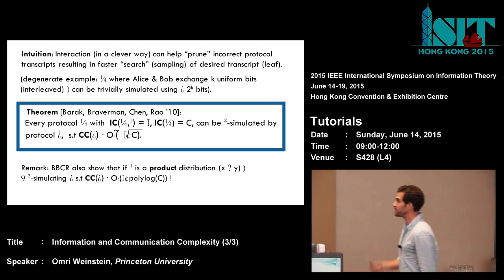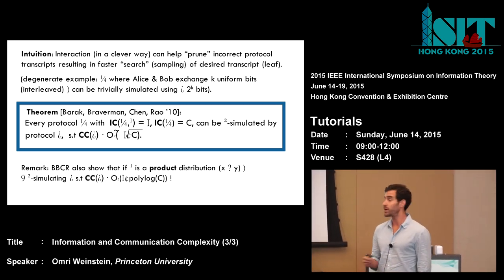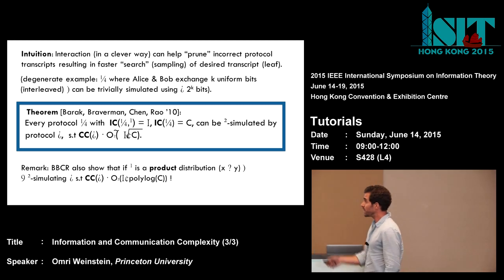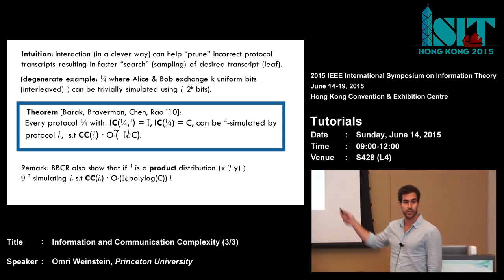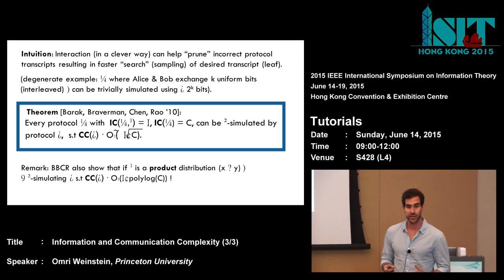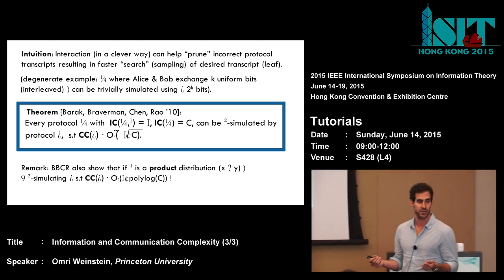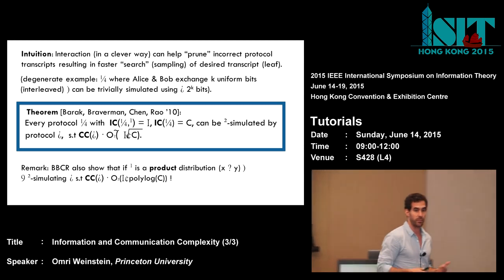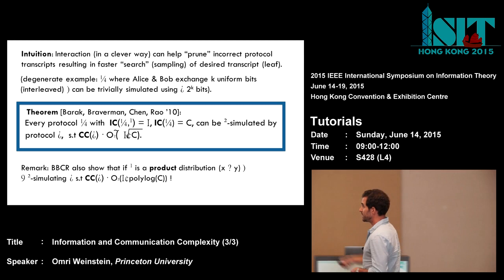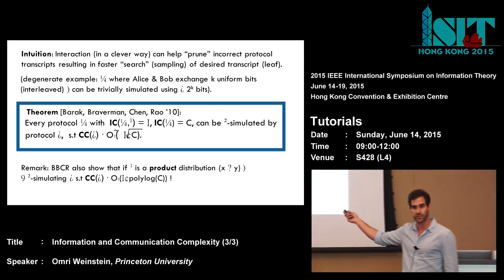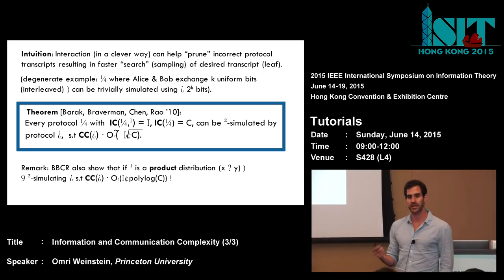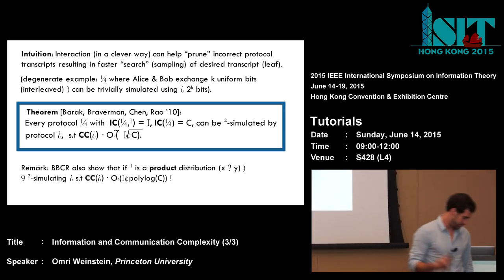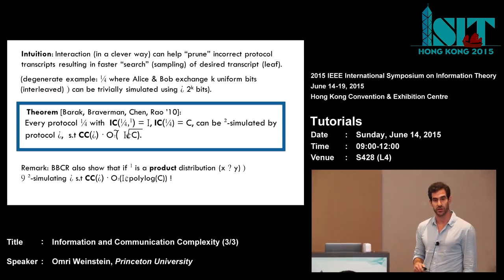It turns out this intuition can be formalized. The breakthrough theorem of Barak, Braverman, Chen, and Rao showed that any protocol with information i and communication c can be compressed roughly to the geometric mean of its information and communication. So if c is much larger than i — say 2^(2^i) — then we're indeed making a lot of progress: we're essentially getting a quadratic savings in our communication cost.